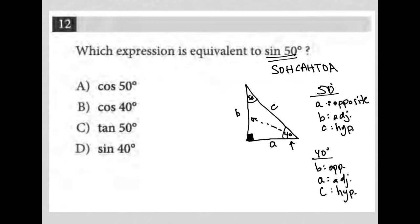Okay. So we know that sine 50 is therefore equal to the opposite over hypotenuse. That's from SOHCAHTOA. So for the 50-degree angle, the opposite is A over the hypotenuse C. So sine of 50 equals A over C.